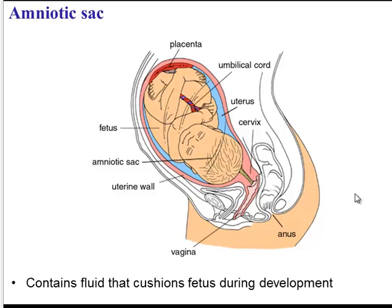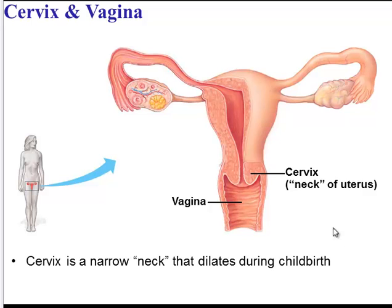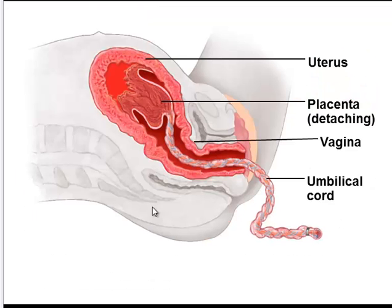Towards the end of pregnancy, when a woman's water breaks, it's really the amniotic sac breaking and releasing the fluid. During childbirth, the baby has to pass out through the narrow neck called the cervix, which will dilate or widen to allow passage of the baby, and then out through the vagina. The vagina is also the entryway for sperm en route to the egg. At the end of childbirth, the placenta and the umbilical cord will pass out of the female's body — this is known as afterbirth.